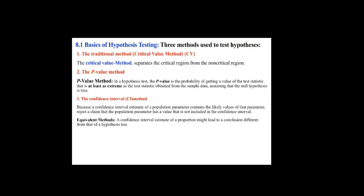The third method is the confidence interval. We've already done confidence intervals, but now we see their interpretation for hypothesis testing. Because a confidence interval contains the likely values of the parameter, reject the claim if the parameter value is not included in the interval. The idea is: if the confidence interval contains the value in H₀, then you do not reject H₀.